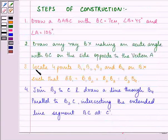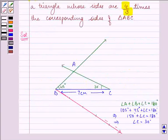We need to locate 4 points B1, B2, B3 and B4 on BX such that BB1 is equal to B1B2 and so on. So let us locate 4 points. Let this be B1, B2, B3 and B4.